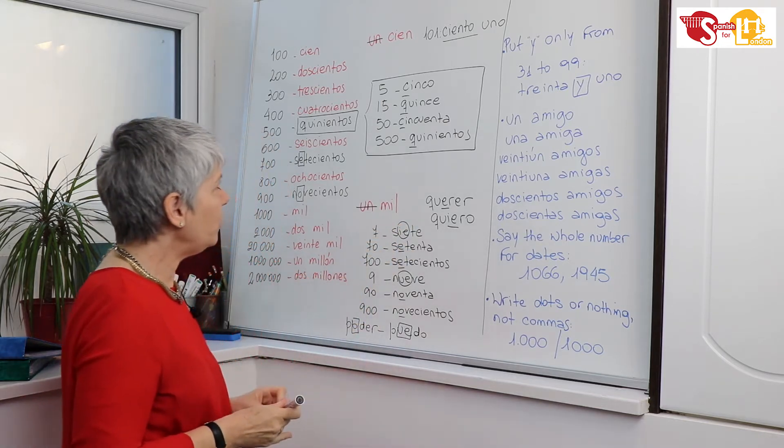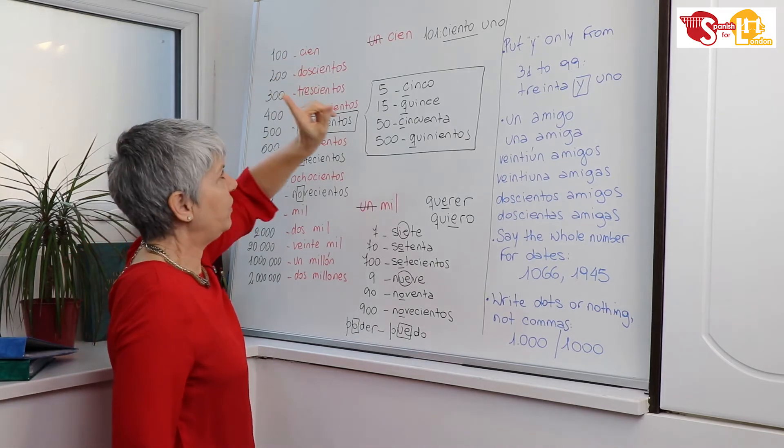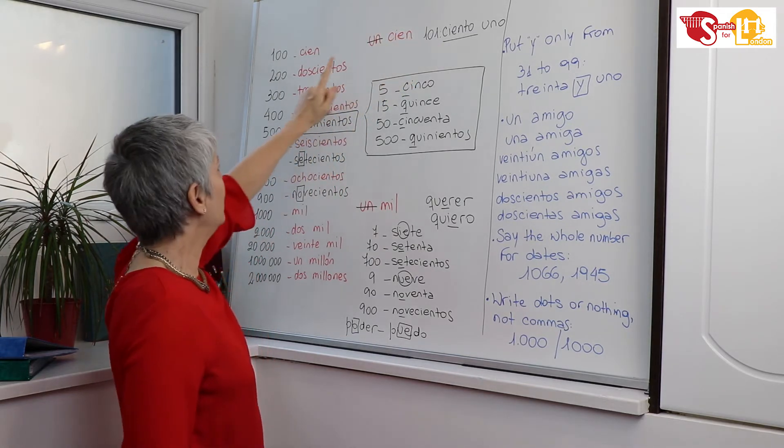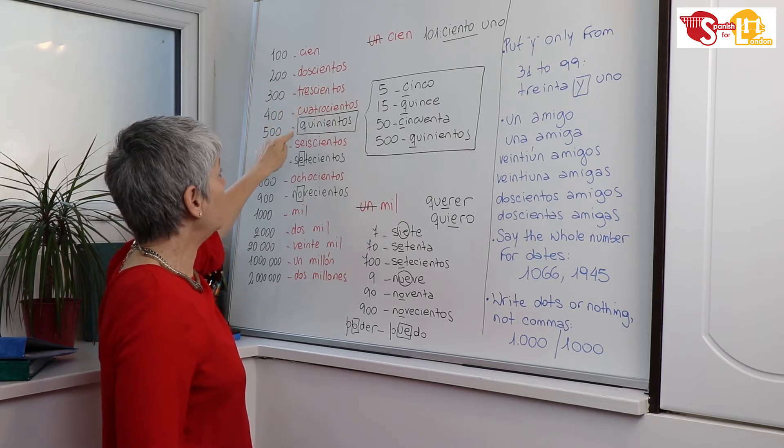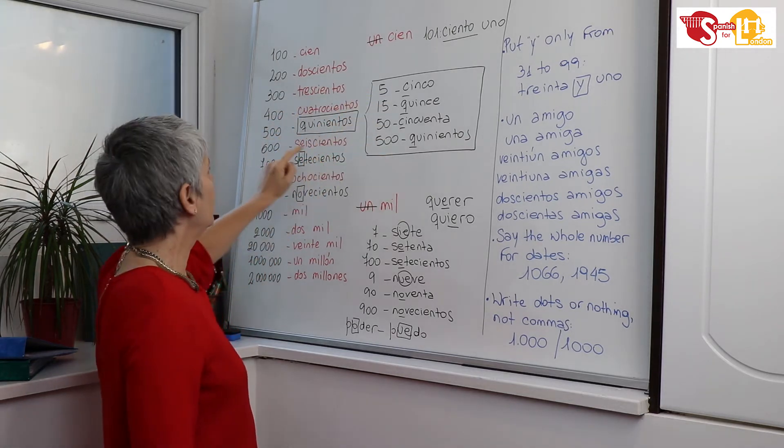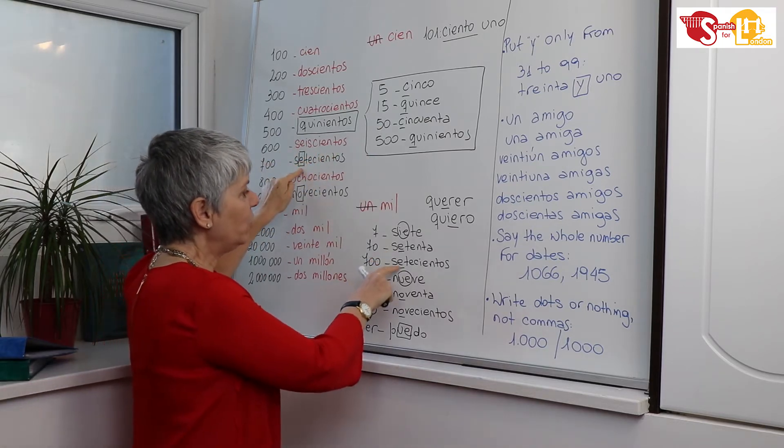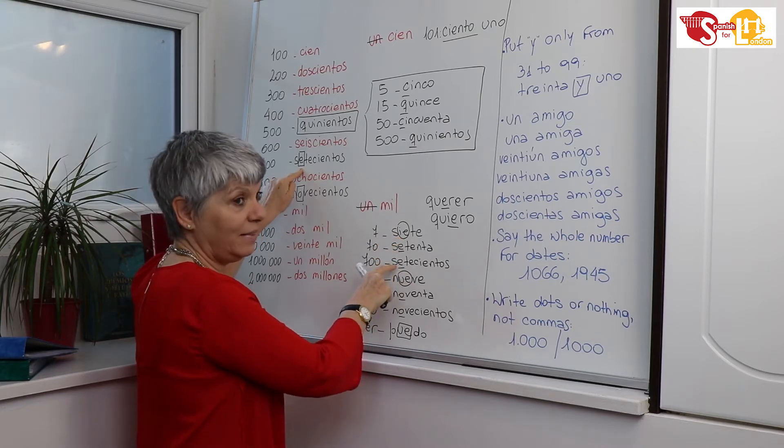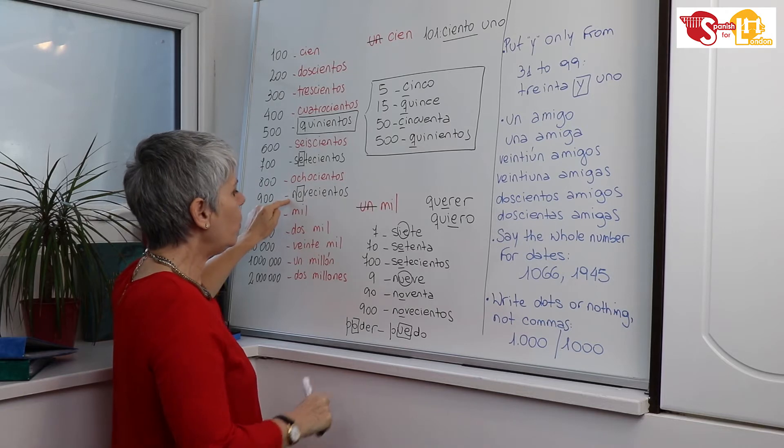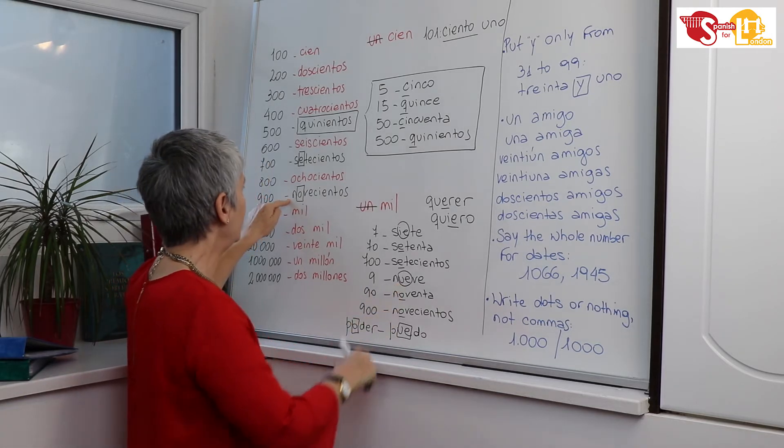So now you know your numbers from one hundred to one thousand. Again: cien, but remember ciento uno, ciento dos, etc. Doscientos, trescientos, cuatrocientos, quinientos (the C-Q-C-Q rule), seiscientos, setecientos (not sietecientos but setecientos), ochocientos, novecientos (not nuevecientos but novecientos), mil.